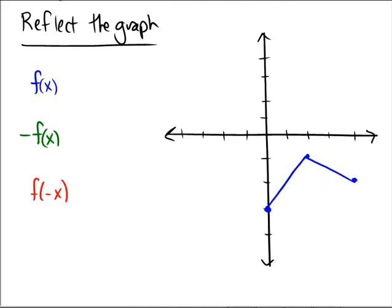For this problem, we're going to take the original blue graph, call it f of x, and then perform reflections over the different axes.